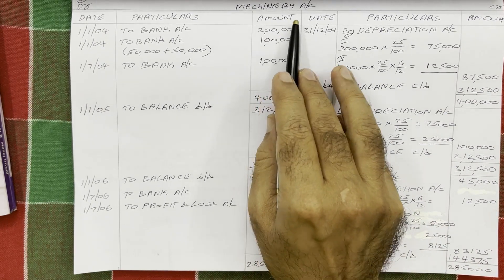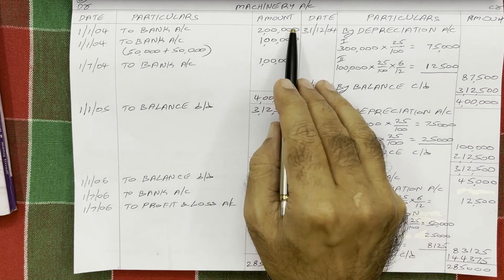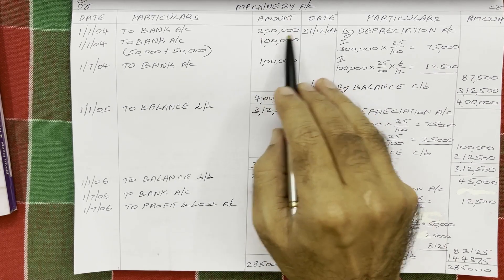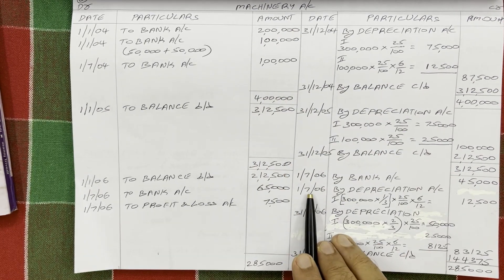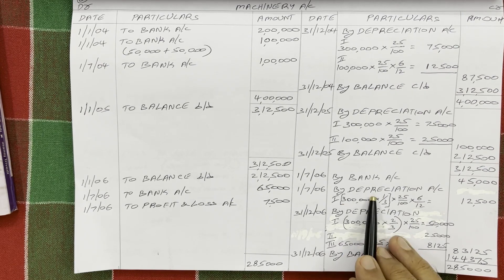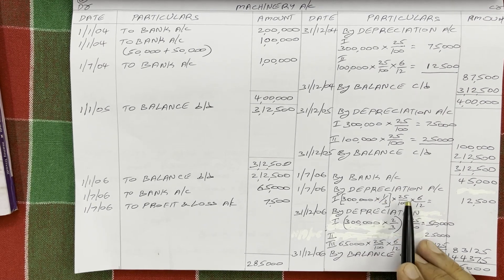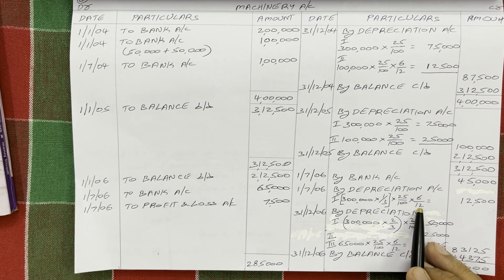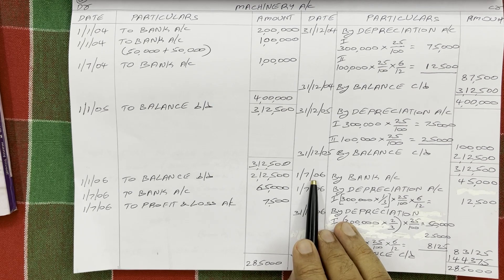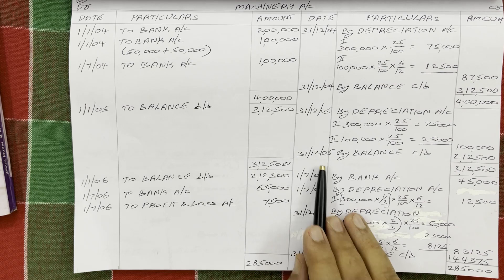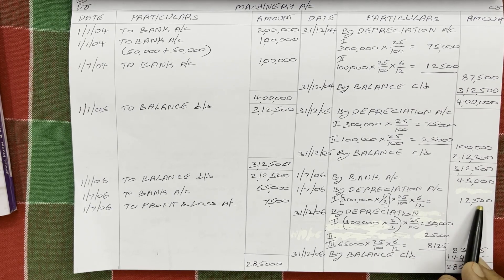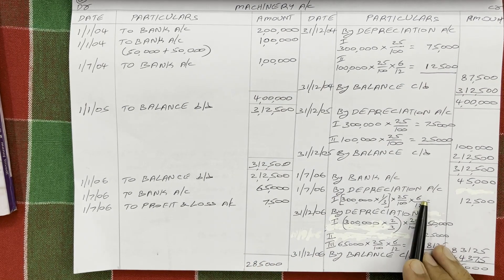For the first asset, one third was sold. Total cost is 3 lakh; one third value is 3 lakh × 1/3 = 1 lakh. On this 1 lakh worth asset at 25% depreciation for 6 months — because from 1st January to 1st July, counting up to 30th June only, is 6 months. So 1 lakh × 25% × 6/12 = 12,500. This is the depreciation on the one-third asset in 2006.